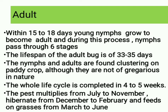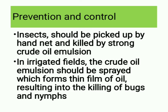The lifespan of the adult bug is 33 to 35 days. The nymphs and adults are found clustering on paddy crop. The whole life cycle is completed in 4 to 5 weeks. The pest multiplies from July to November, hibernates from December to February, and feeds on grasses from March to June.